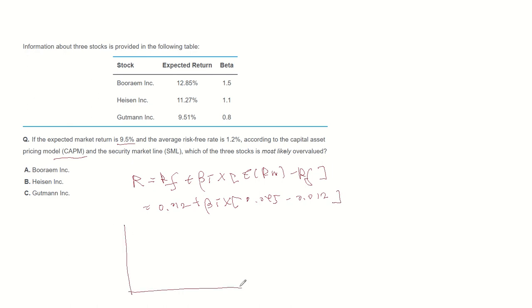In the relationship between beta and expected return, there is a direct relationship, and this line is called the Security Market Line. When expected return is above the SML line, then the stock is undervalued. And when expected return is below the Security Market Line, then the stock is overvalued.